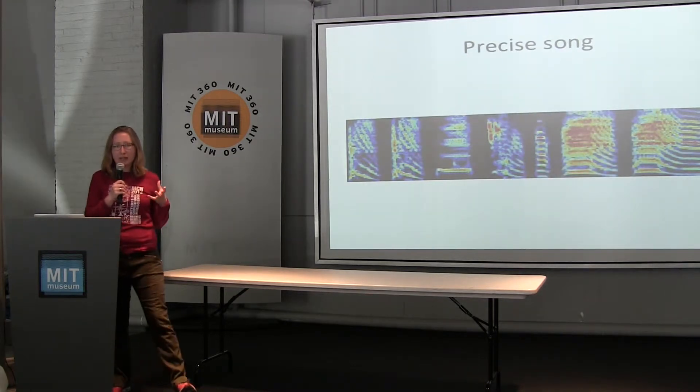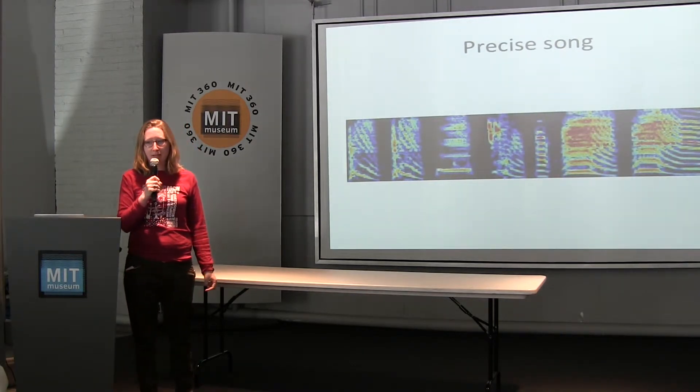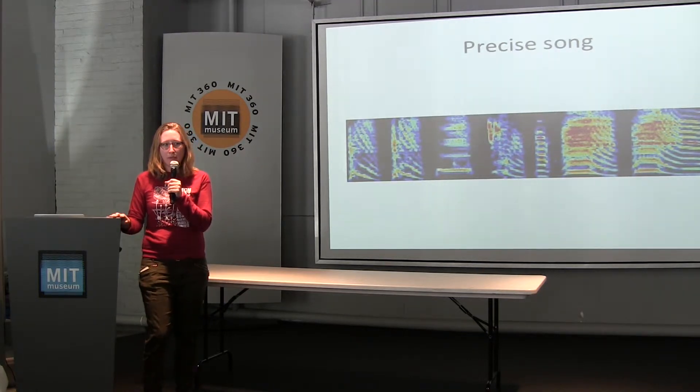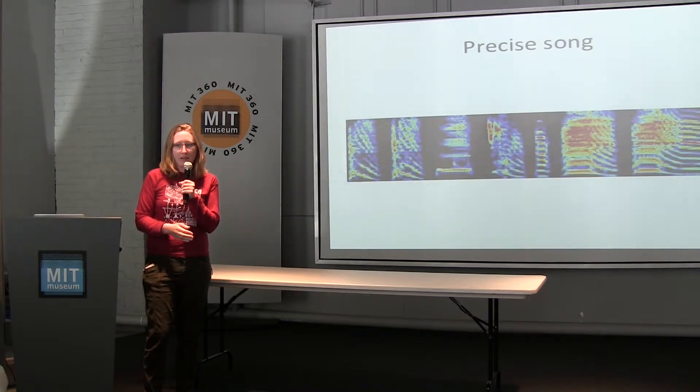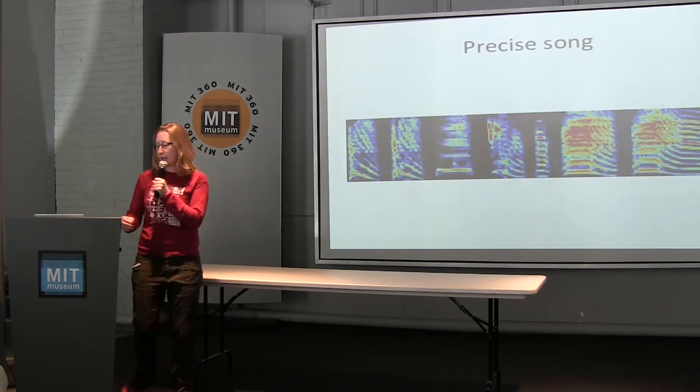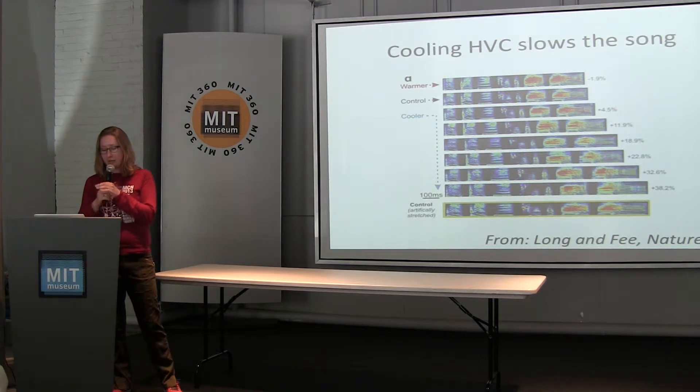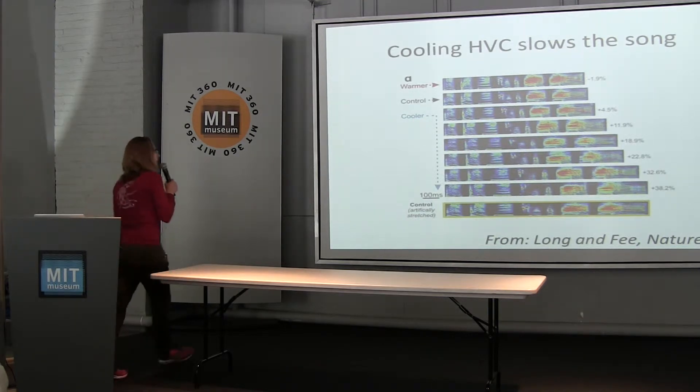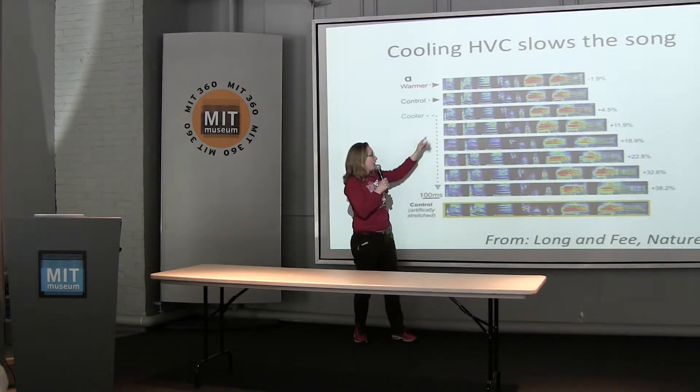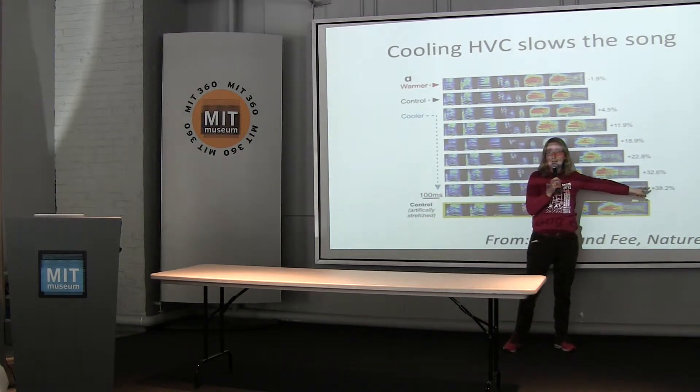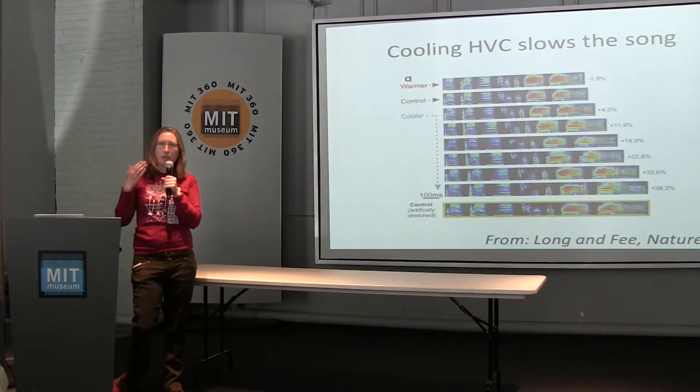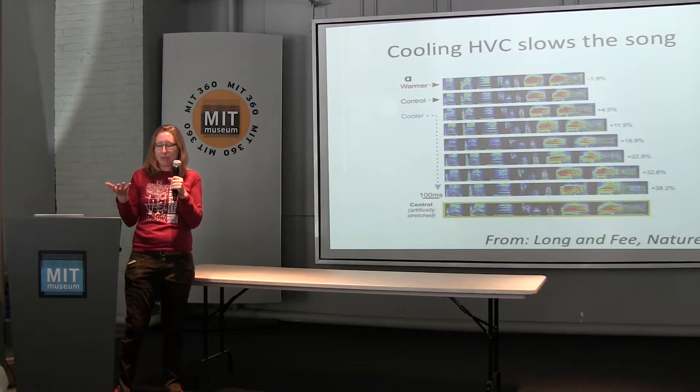And one way of confirming that this is the region that stores the precise timing of the song is that you can actually cool this brain region when he tries to sing. And what cooling does is it slows down the song. So you slow down the region that's determining the timing of the song, and the song gets slower. So again, this is work from Michael's lab, and this was his original song, and his song was slowed, and you can see time was just stretched out, and now the bird is singing a much slower song. So that is the region of the brain that controls what his best song is, remembers what he should do.